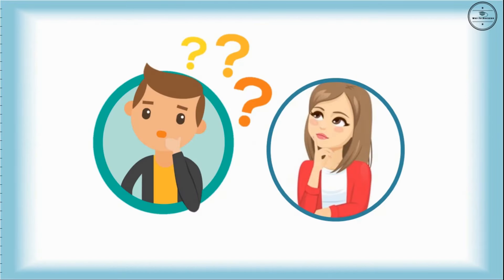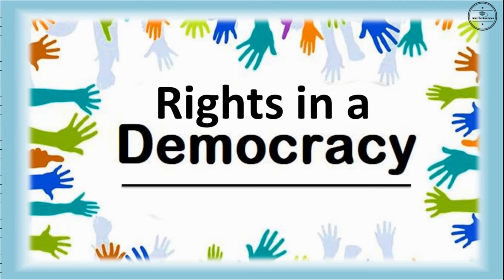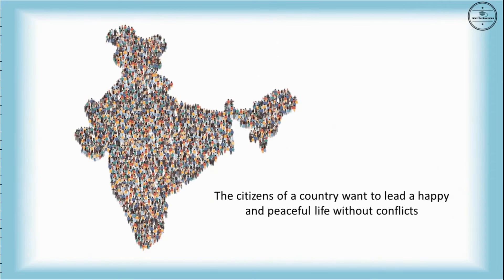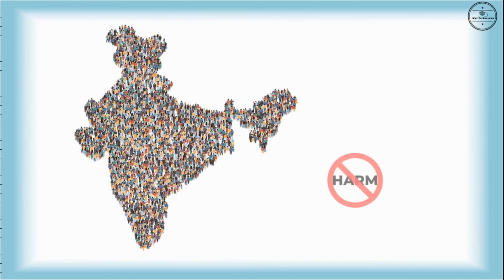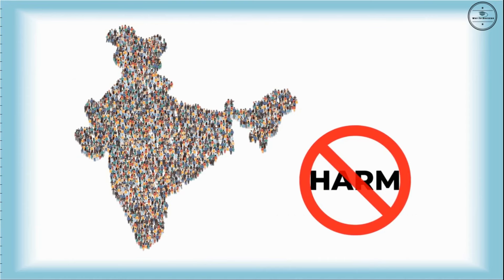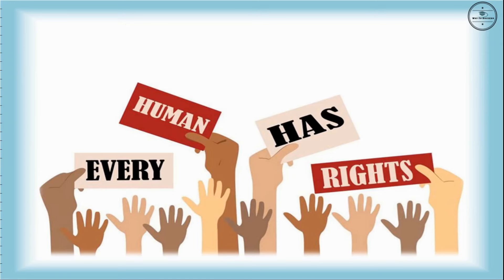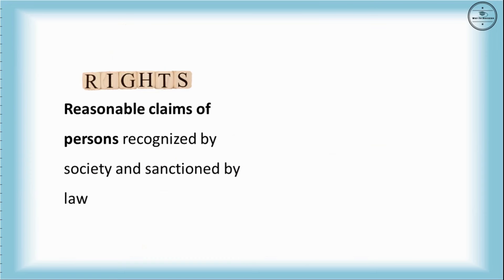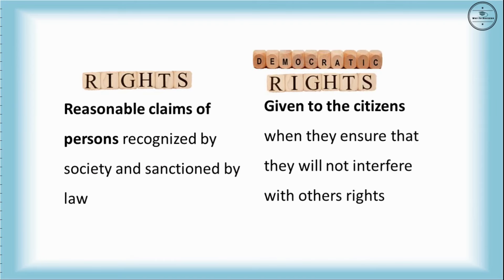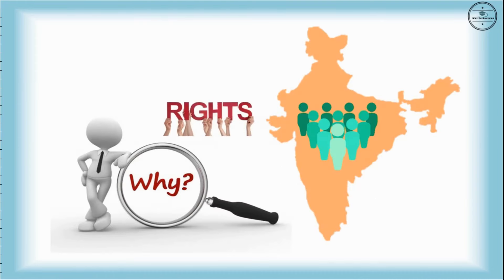Think of all the examples that we have discussed so far. In a democracy, the citizens of a country want to lead a happy and peaceful life without conflicts. For this, we should all live in a way so that no one harms us and we do not harm anyone. Rights are reasonable claims of persons recognized by society and sanctioned by law. Democratic rights are given to the citizens when they ensure that they will not interfere with others' rights.